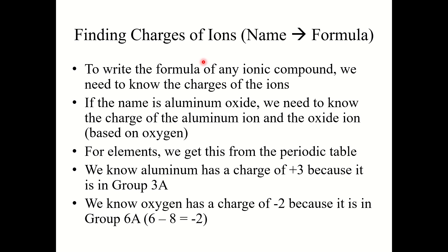Now let's do the reverse: given the name, we need to generate the formula. To write the formula of any ionic compound, we need to know the charges of the ions. For example, if the name is aluminum oxide, we need the charges of the aluminum ion and the oxide ion. Aluminum is +3 because it is in Group 3A. Oxygen has a charge of −2 when it forms an ion because it is in Group 6A and needs to gain 2 electrons to match a noble gas configuration.